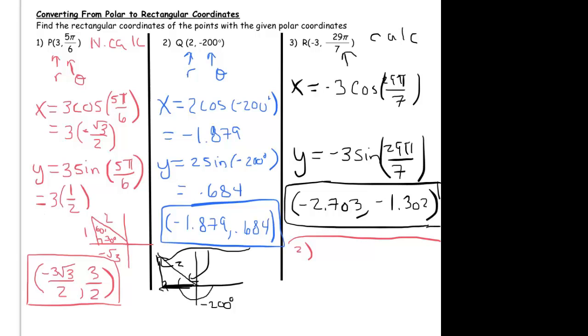You could plot the point, 2 negative 200 degrees, which we've seen brings you here. So negative 200 degrees will bring you there. Now the angle of interest that you obviously care about is this one right in here, because it's the one that will help you make the triangle, that's 20 degrees, right? So you could look at the triangle and then do sine of 20 degrees equals y over 2, cosine of 20 degrees equals x over 2, and solve them.